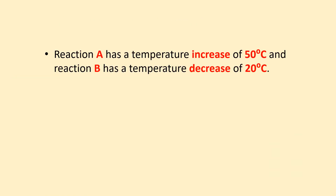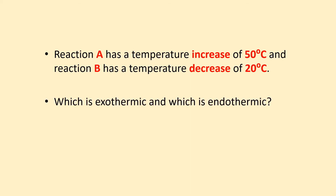Have a look at this. Reaction A has a temperature increase of 50 degrees C and reaction B has a temperature decrease of 20 degrees C. Which one do you think is exothermic and which one do you think is endothermic? You can write it down or just do it in your head. The answers are: A is exothermic and B is endothermic, because A is giving out heat and B is taking in heat.